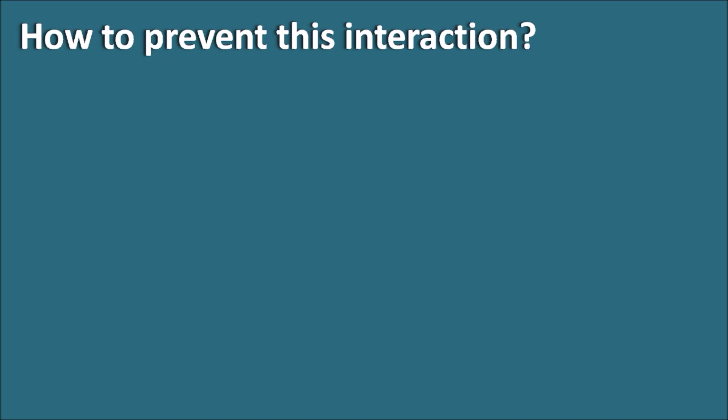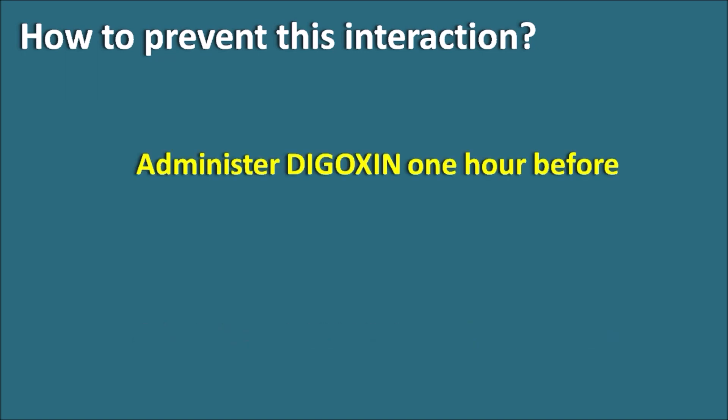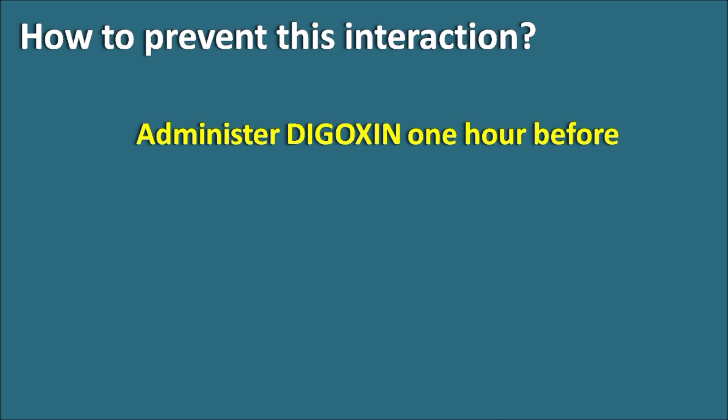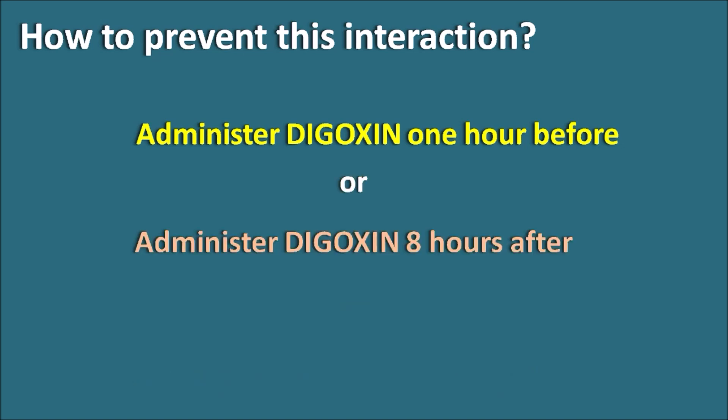How do we prevent this interaction? Because this is only a moderate interaction at the absorption level — not at the metabolism level — we can easily prevent it by separating the administration of the two drugs. Digoxin should be administered one hour before cholestyramine so that digoxin can be significantly absorbed within that hour. Alternatively, digoxin can be administered eight hours after cholestyramine, since cholestyramine may reside in the GIT for up to eight hours and could interact with digoxin absorption.